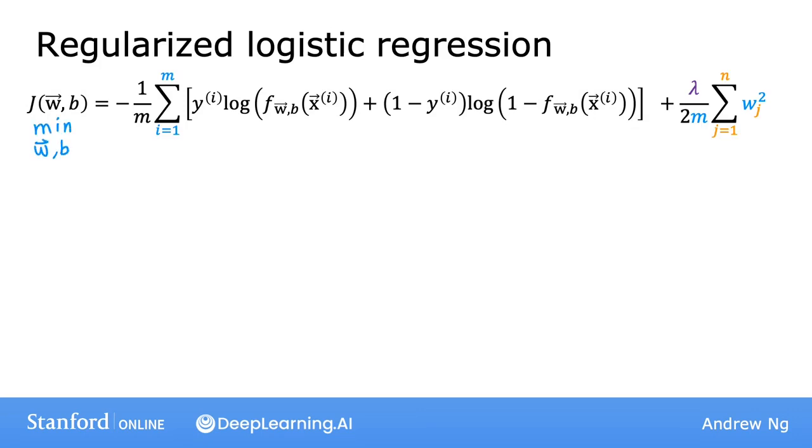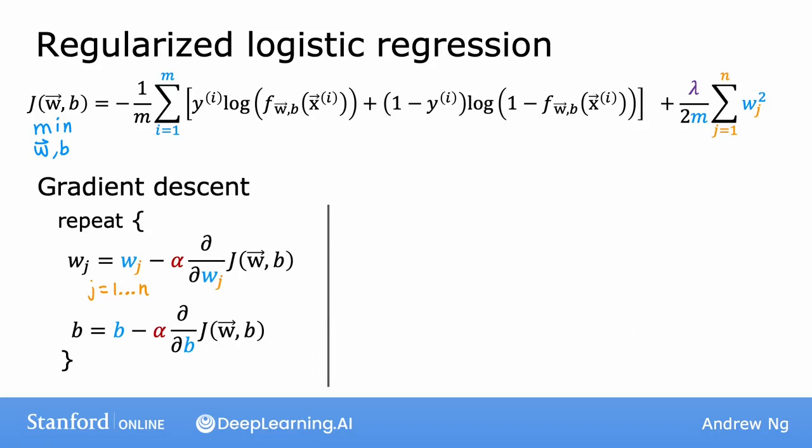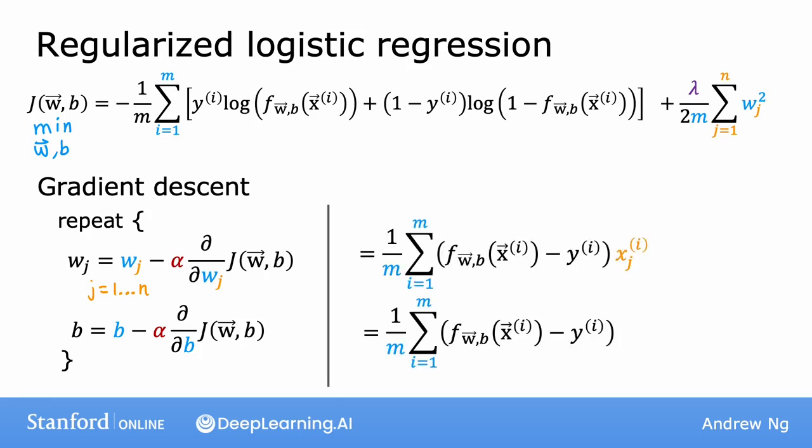And to implement gradient descent, as before, we'll carry out the following simultaneous updates over wj and b. These are the usual update rules for gradient descent.